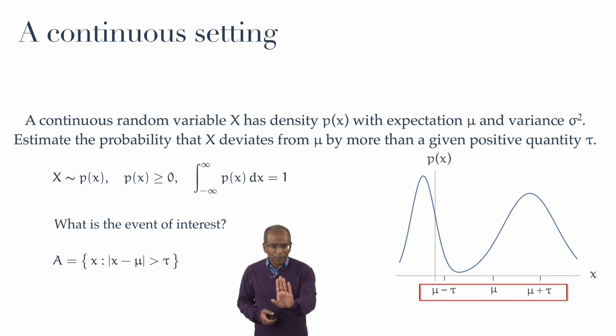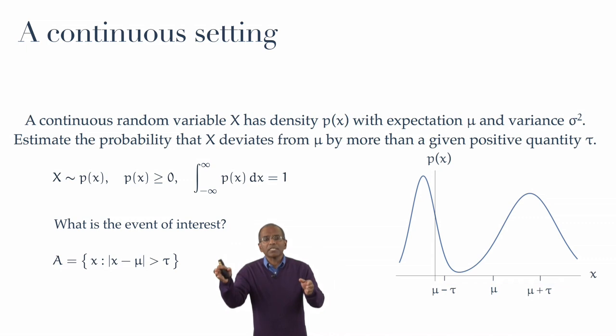And starting from mu, you move away by tau in either direction to mu plus tau and mu minus tau.